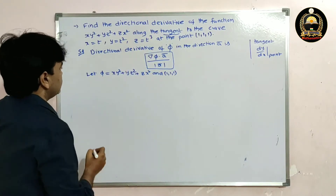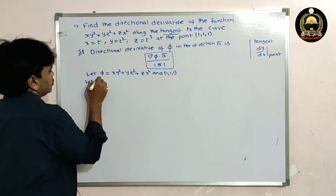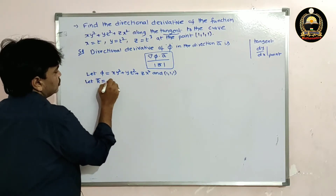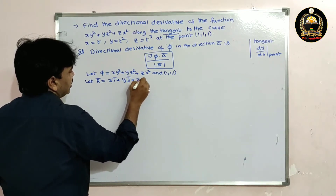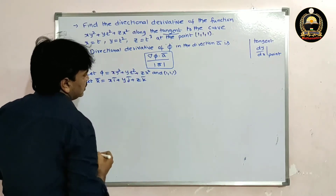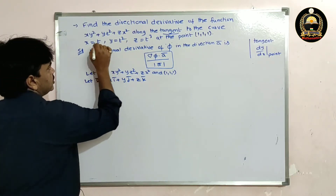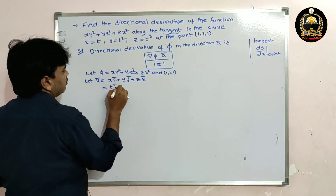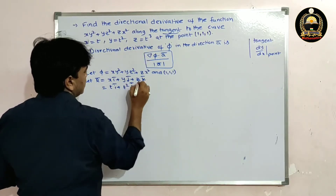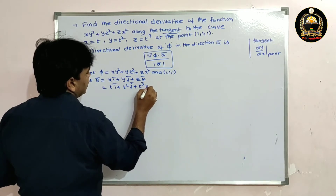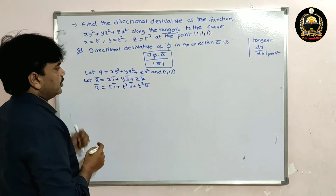Now, for the tangent to the curve, let r̅ be the position vector. So r̅ = xi + yj + zk. Substituting x = t, y = t², z = t³, we get r̅ = ti + t²j + t³k.